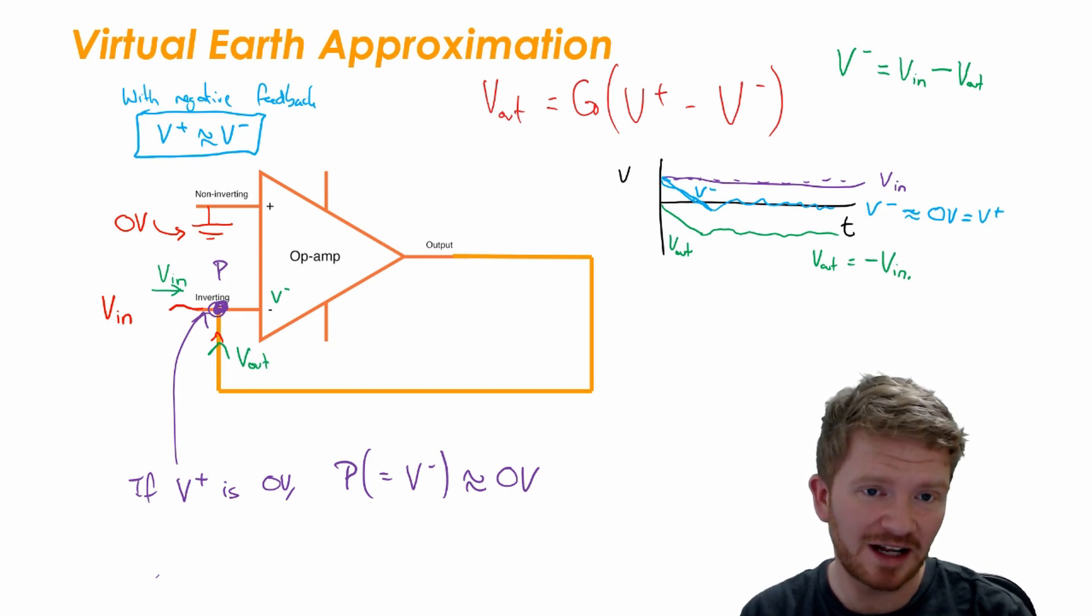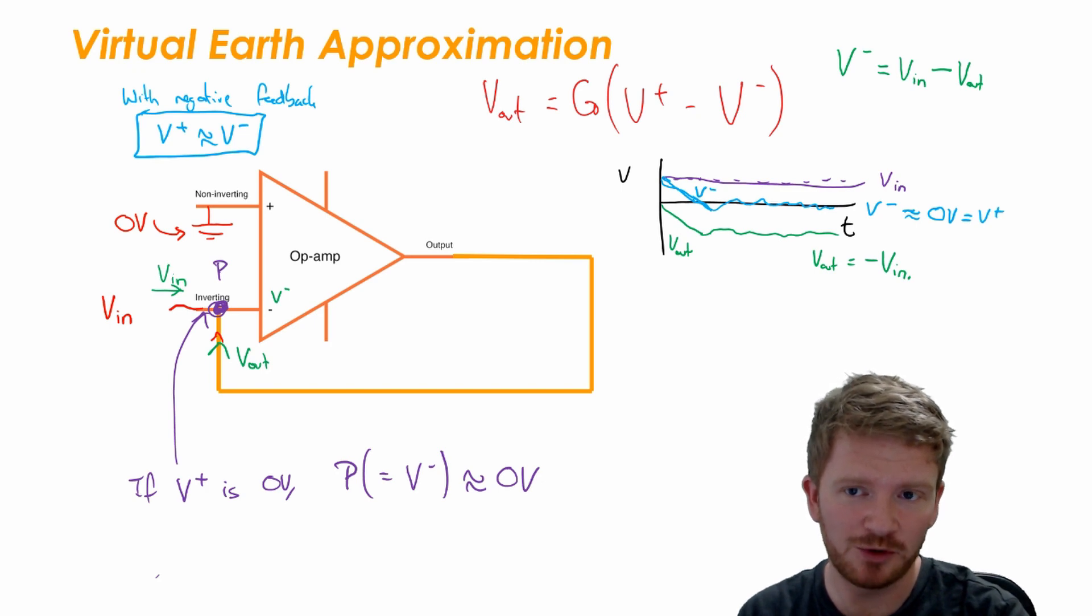It doesn't, it's not going to be exactly zero volts because I said here it will actually oscillate up and down around it, but it will be almost zero volts and it will oscillate between those two values. Now it's really important that you are clear in your head and you can believe that point P will be zero volts.